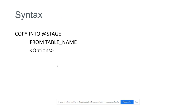The syntax is simple: COPY INTO the stage — it can be internal or external. Mention the stage object name: COPY INTO stage_object FROM table_name. If you want to use a fully qualified table name, it's like database_name.schema_name.table_name. There are also some options we can use with the unloading COPY command.